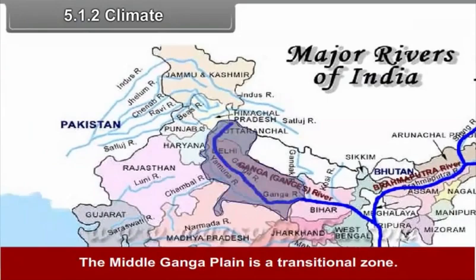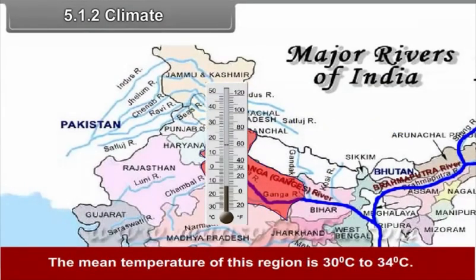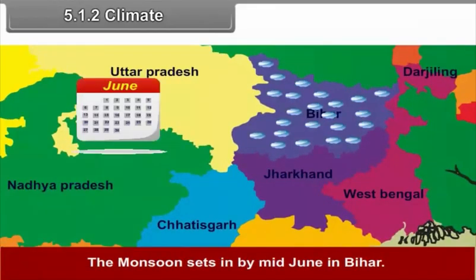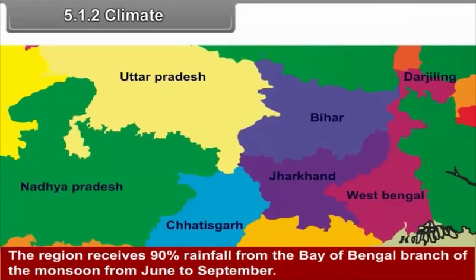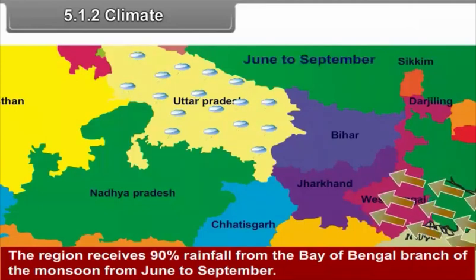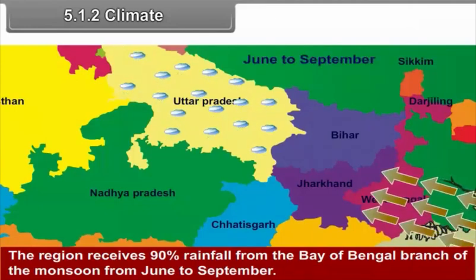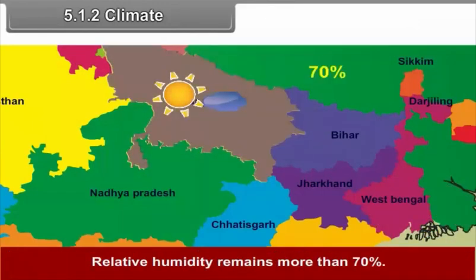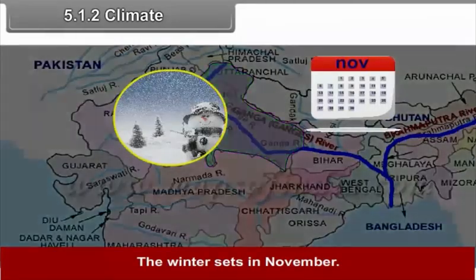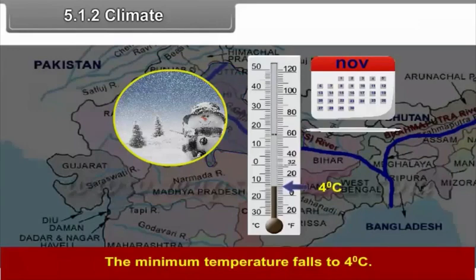The middle Ganga plain is a transitional zone. The mean temperature of this region is 30 to 34 degrees Celsius. The monsoon sets in by mid-June in Bihar. The region receives 90% rainfall from the Bay of Bengal branch of the monsoon from June to September. Relative humidity remains more than 70%. The winter sets in November and the minimum temperature falls to 4 degrees Celsius.